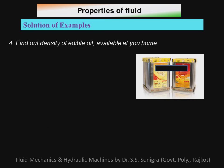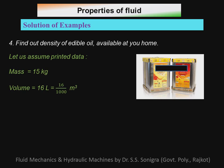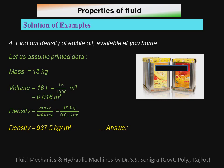Example number four: find the density of edible oil available at your home. Take readings from an oil tank — suppose the printed data on the tank shows mass is fifteen kilograms and volume is sixteen liters. This data is printed on every oil tank. Sixteen liters equals sixteen divided by one thousand equals zero point zero one six meter cubed. Density equals fifteen divided by zero point zero one six equals nine hundred and thirty-seven point five kilograms per meter cubed. That is the density of the given edible oil — you can do this experiment at home.